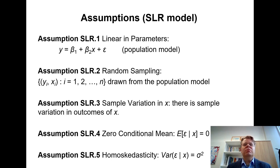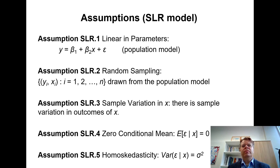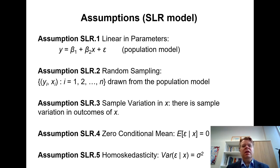The fourth and fifth assumptions refer to the error term epsilon. The fourth assumption is that epsilon has zero conditional mean — the expected value of epsilon conditional on x equals zero. Notice this is a conditional expectation: for any given level of x, the expected value of epsilon should always be zero. The zero conditional mean is a slightly stronger condition than just requiring the unconditional mean of epsilon to be zero, and I will discuss that in more detail later.